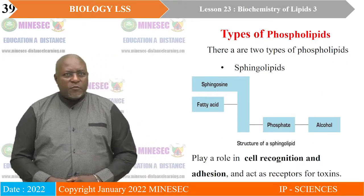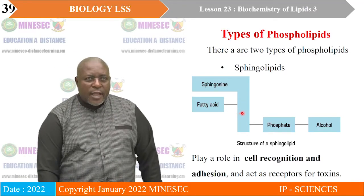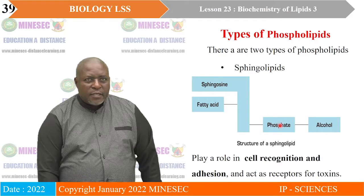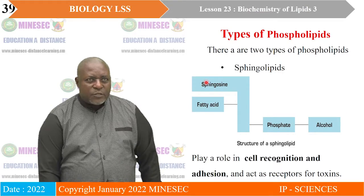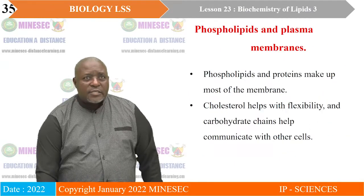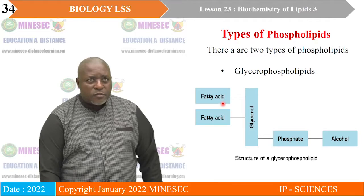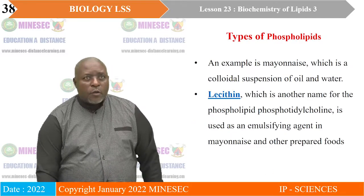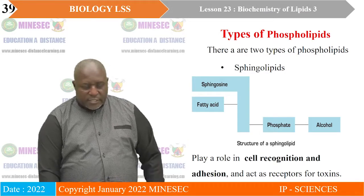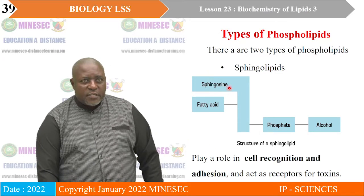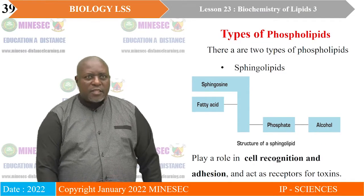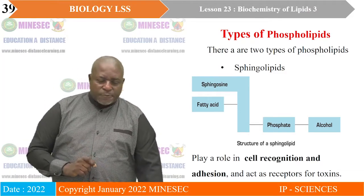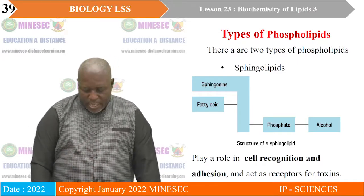There is also sphingolipids. A sphingolipid has glycerol, one fatty acid, with another replaced by sphingosine, plus a phosphate and an alcohol. In glycerophospholipids there were two fatty acid molecules, but in sphingolipids only one fatty acid molecule remains, and sphingosine replaces the other one — with the phosphate and alcohol still present. Sphingolipids play a role in cell recognition, adhesion, and act as receptors for toxins.